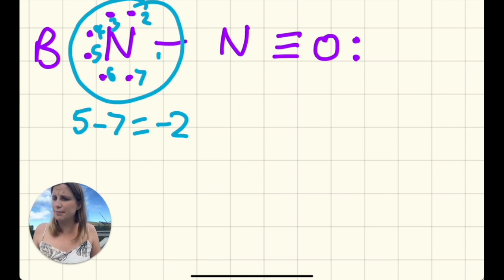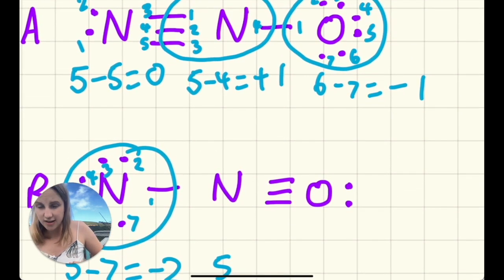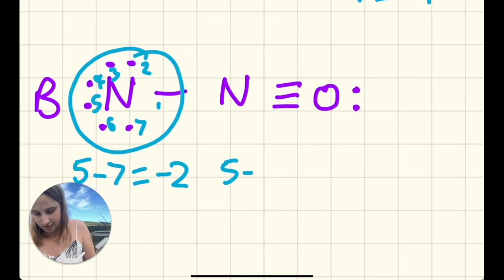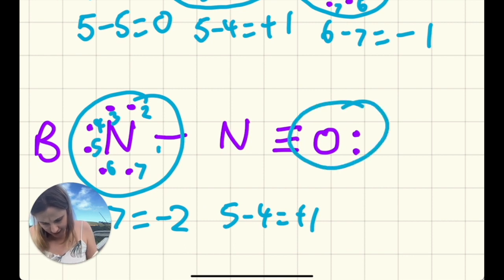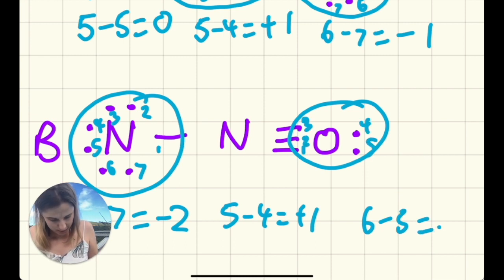The middle nitrogen is actually exactly the same as the nitrogen above it. It's got exactly the same bonds to it, so this one is still five minus four—that was right—five minus four gives you a plus one. And then this oxygen at the end is six minus one, two, three, four, five to give you a plus one.